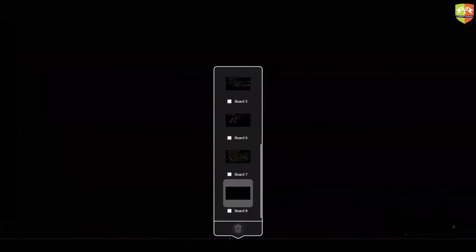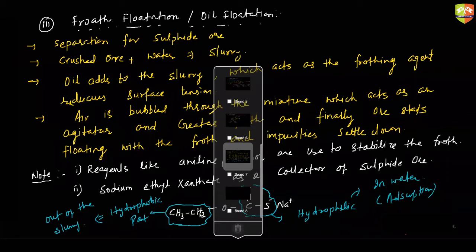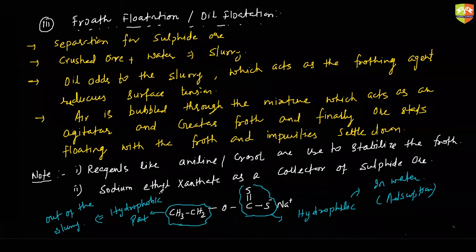The collector is something which collects sulphide ore — as the name suggests, it traps the sulphide ores. Sodium ethyl-xanthate acts as a collector: its hydrophobic part, out of the water in the slurry, traps the sulphide ore present in the slurry so we can separate it easily. The collector is used to trap sulphide ores.